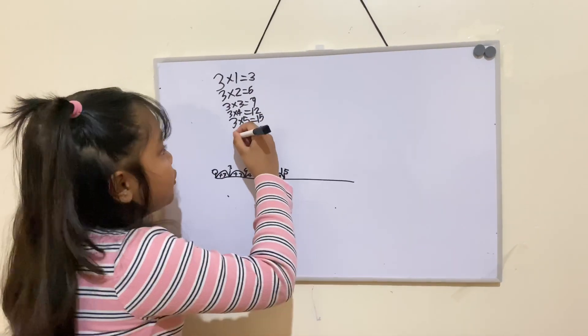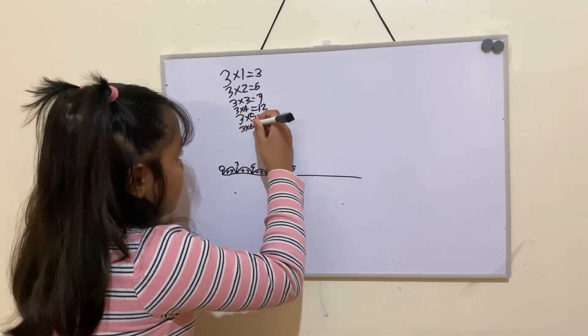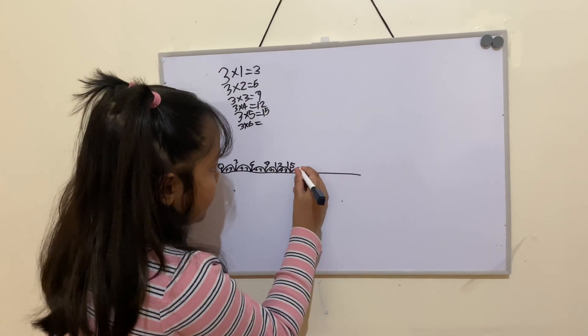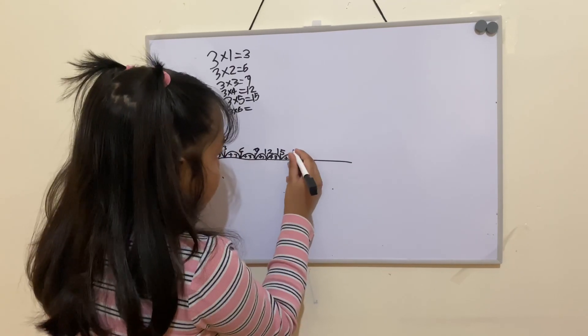And you just keep doing it. 3 times 6. You need to add 3 again. Equals 18.